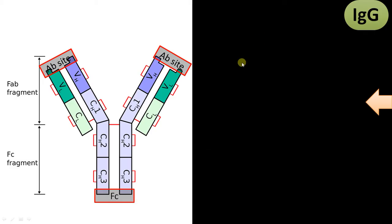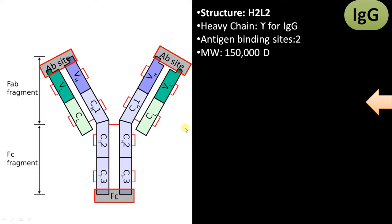Now let's see the features of IgG. The structure is H2L2, meaning two heavy chains and two light chains joined by disulfide bonds. Each immunoglobulin has a unique heavy chain. For IgG, it is the gamma chain. It has two antigen binding sites. Molecular weight is approximately 150,000 dalton. It is the most abundant immunoglobulin, accounting for nearly 80% of total immunoglobulin.